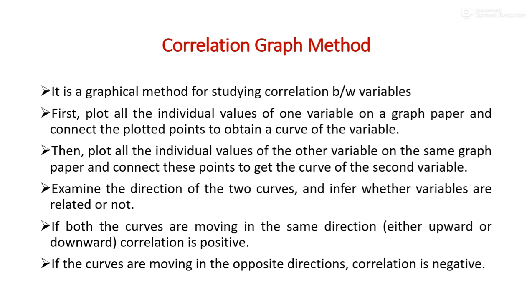There are two variables in a correlation analysis. At first, we have to plot all the individual values of the first variable on a graph paper and connect all the points. Now we get a curve of that variable. Then, repeat the same procedure for the second variable on the same graph paper — plot all the individual values of the second variable and connect them to get the curve of the second variable.